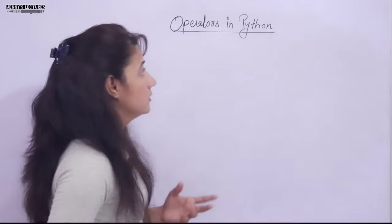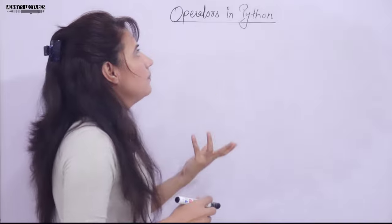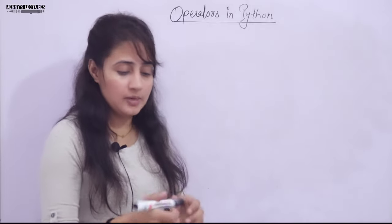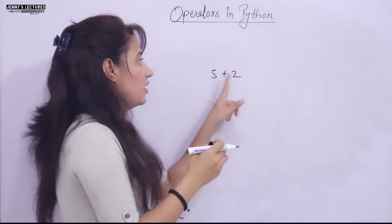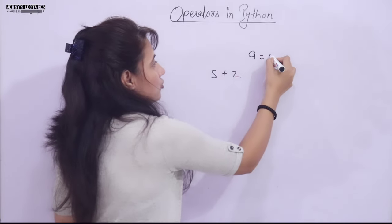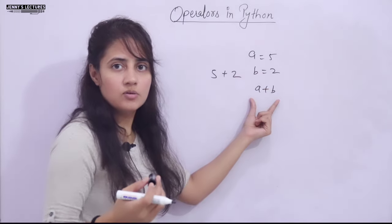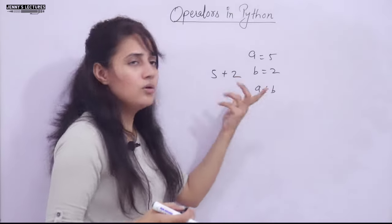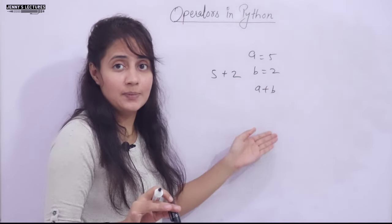So what are operators in Python? Operators are simply symbols used to perform some operations on values or variables. For example, in '5 + 2', the plus is the operator and 5 and 2 are operands or values. Similarly, if we write 'a = 5' and 'b = 2', then 'a + b' — here a and b are variables. Operators are used to perform operations on either values or variables.